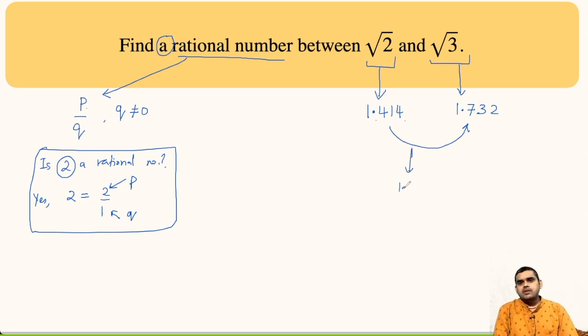So, it could be 1.5 because it lies between 1.414 and 1.732. And we can express it as 15 by 10 and then simplify. So, 5 times 3, 5 times 2. So, 3 upon 2 is one such rational number.